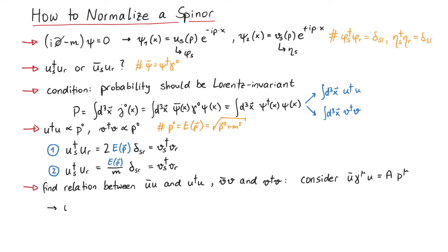First, we just considered a zero component, which leads to the equation u dagger u is equal to a times the energy. Second, we contract the original equation with the four-momentum, which yields u bar p slash u equals a times m squared.